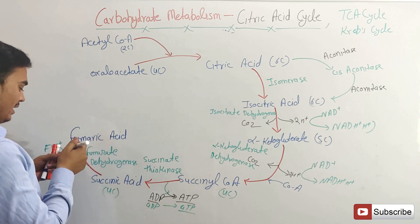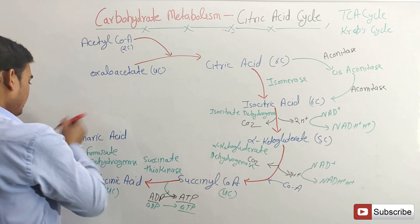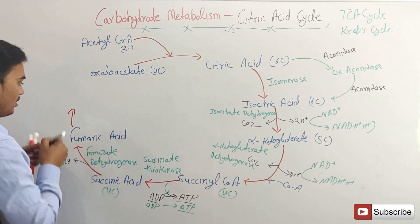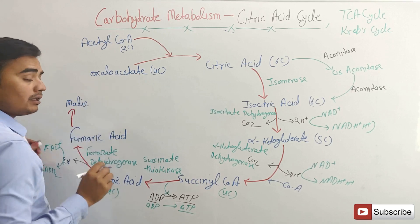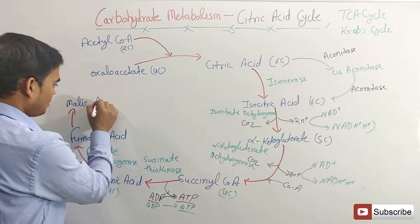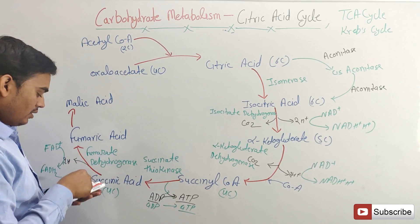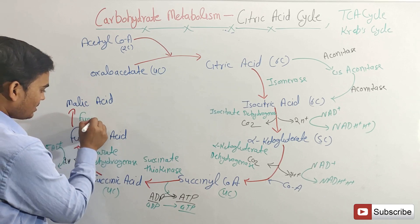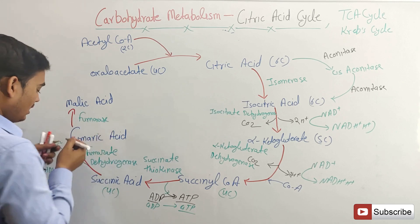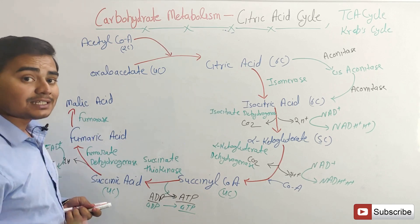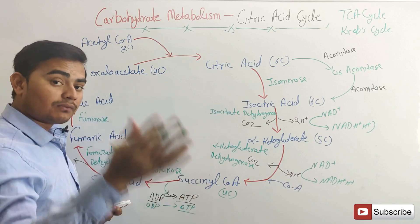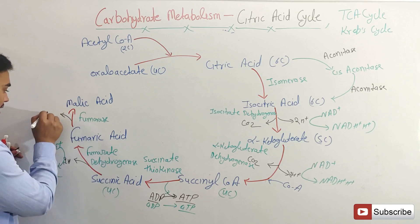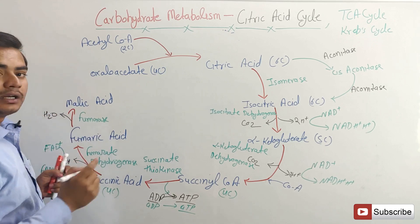This fumaric acid will convert into malic acid — this is only isomerization. The enzyme used is fumarase. An important point: at this step of the Krebs cycle, when fumarase is used, one molecule of water is removed.